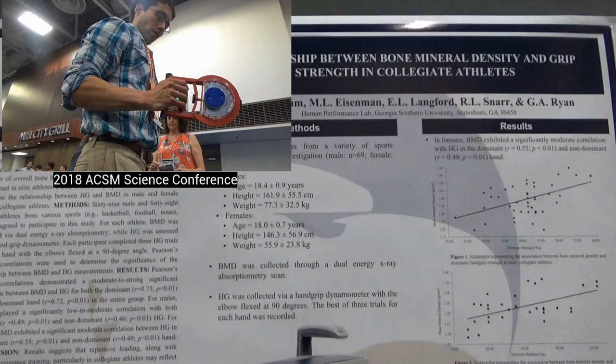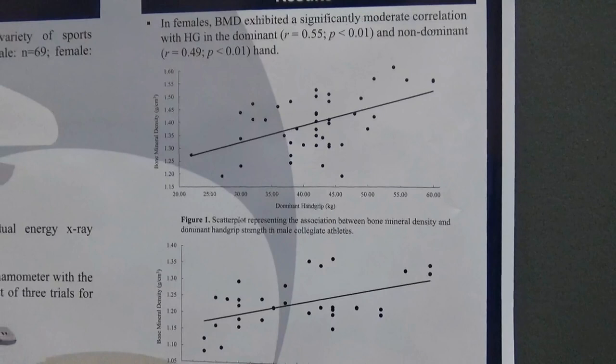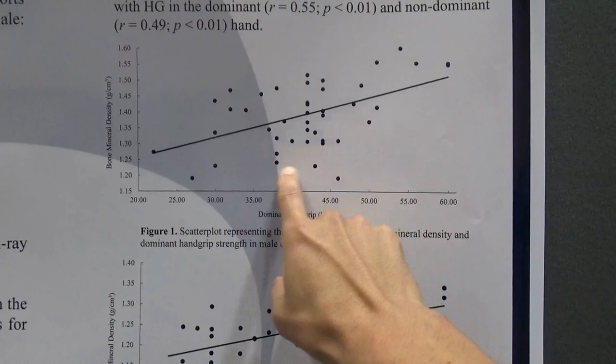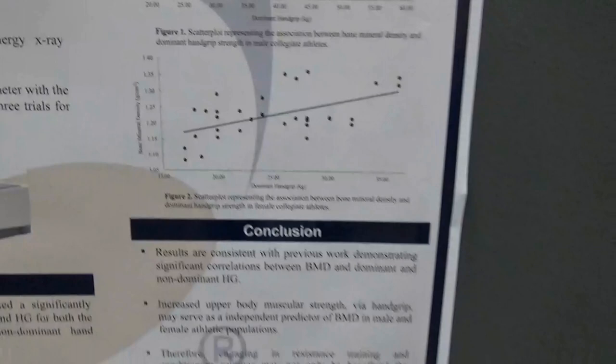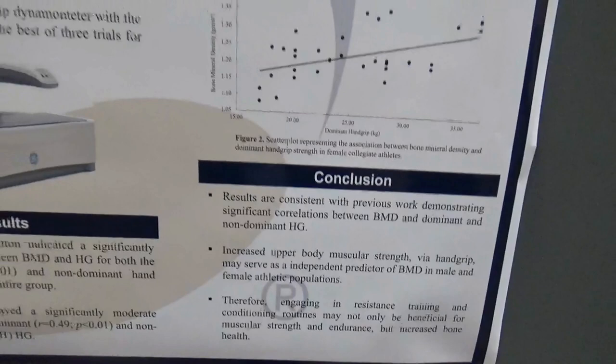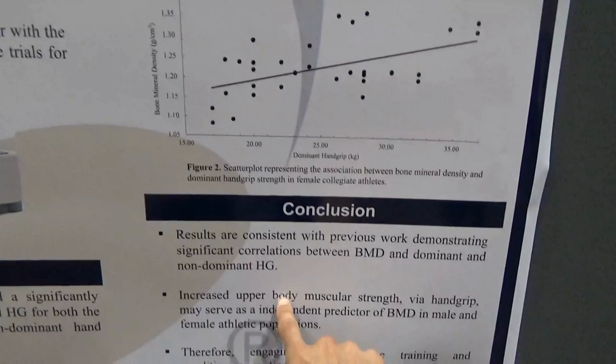Here's another truly remarkable paper. Last year I did the hand grip strength test with the grip dynamometer. Bone mineral density is important, particularly for reduction of risk of osteopenia and osteoporosis. This study found a significant moderate association between grip strength and bone mineral density — as grip strength went up, so did bone mineral density. Essentially, we're looking at the potential of hand grip strength to be a surrogate measure of bone mineral density, which supports the conclusion that increasing upper body strength via hand grip may serve as a predictor of bone mineral density in male and female athletic populations.